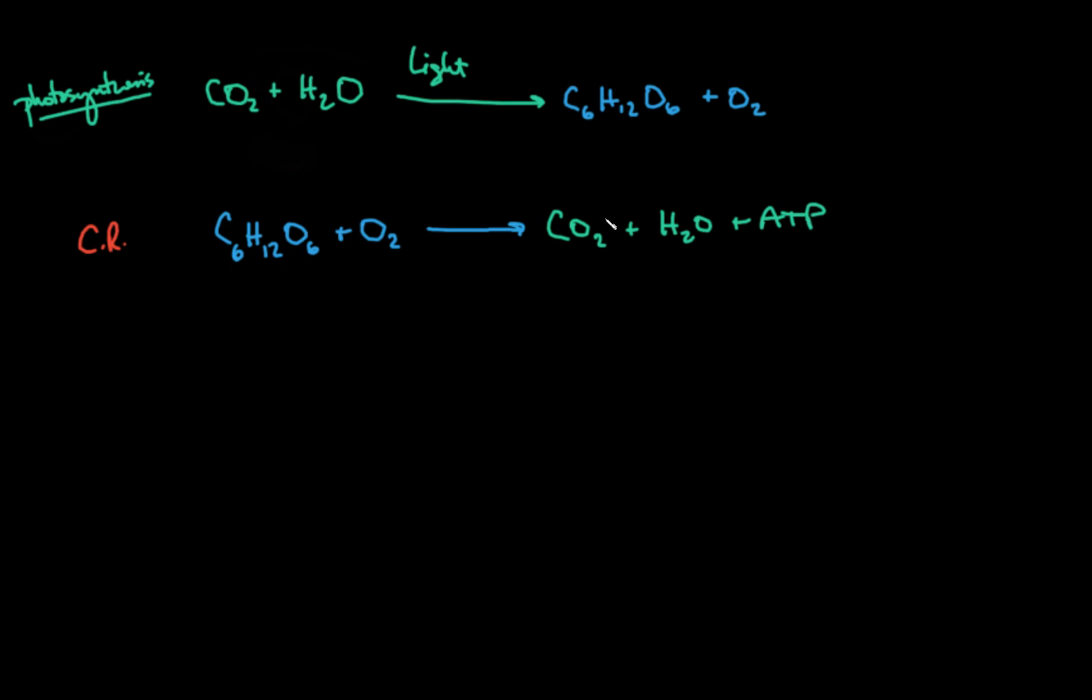And so if you were to think about canceling things out, let's make sure we've got the right number of molecules on each side. To balance this reaction out, we've got six carbon dioxide, six waters, one glucose, and six O2s. Again, we've got one glucose, six oxygens, six CO2, six waters, and something like 36 or 38 ATP depending on what we're talking about. And that's a lot of energy molecules.